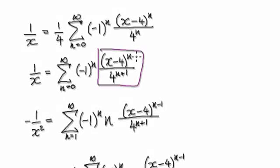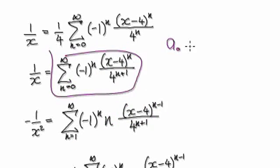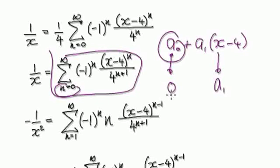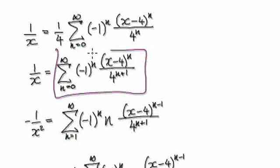Now differentiate. When you differentiate a summation the n comes down, the bubble stays intact, and the exponent decreases by 1. Note the index starts at 1 after differentiation, because the n=0 constant term vanishes. So differentiating 1 over x gives negative 1 over x squared equals the differentiated series. Then times both sides by negative 1, pushing the minus sign in — same base — so that exponent becomes n plus 1.